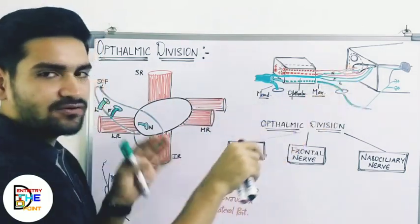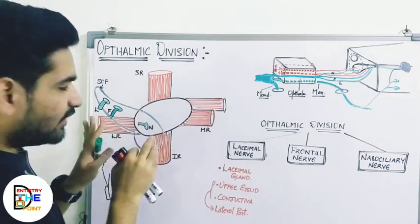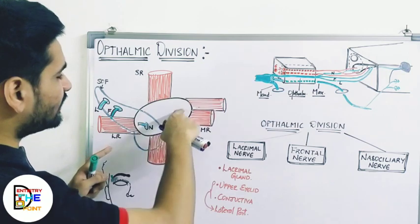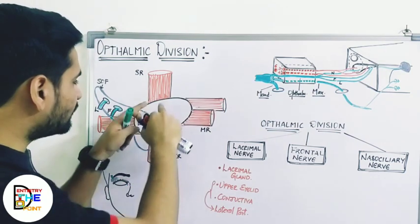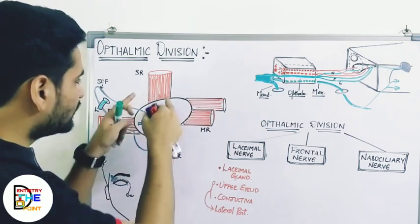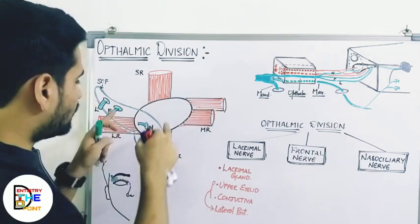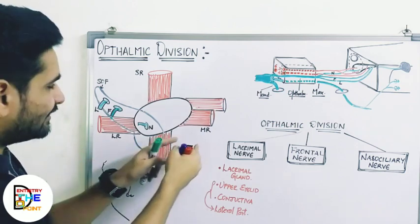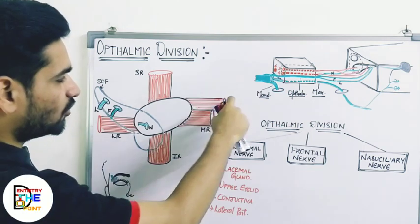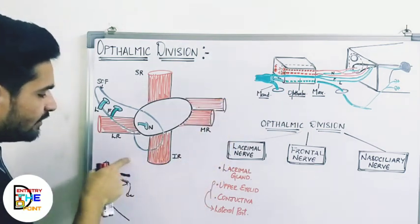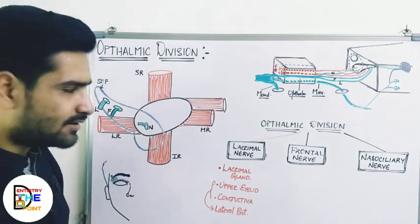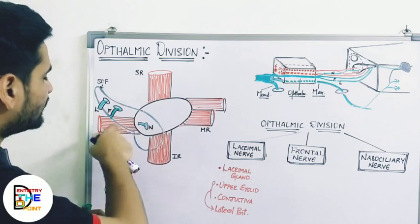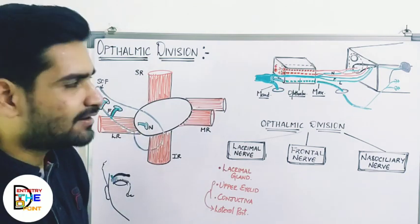This is a zoomed-in diagram. If we see the orbit from the front or behind, this is the eyeball and this is the common tendinous ring — to which all the muscles of the eyeball are attached: superior rectus, inferior rectus, lateral rectus, medial rectus, along with superior oblique and inferior oblique. The superior orbital fissure is adjacent to the common tendinous ring.